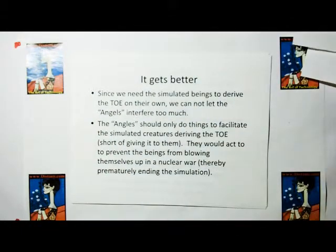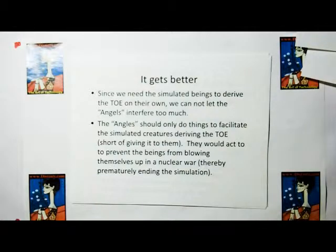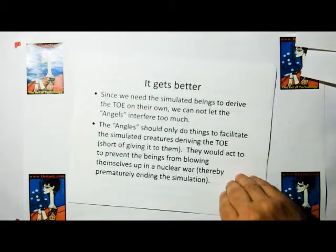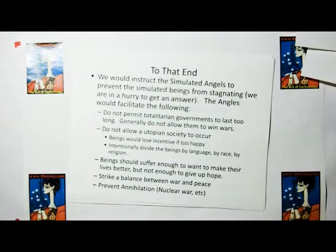They would have powers a little bit above what the normal simulated beings would have. This could become a problem and could lead to the concept of a fallen angel. It sounds familiar, doesn't it? But it gets better. Since we need the simulated beings to derive the theory of everything on their own, we cannot let the angels interfere too much. The angels should only do things to facilitate the simulated creatures deriving the theory of everything, short of actually giving it to them. Because remember, we want them to come up with it on their own. The angels would act to prevent the beings from blowing themselves up in a nuclear war, thereby prematurely ending the simulation.